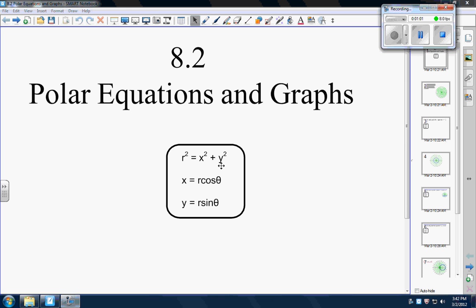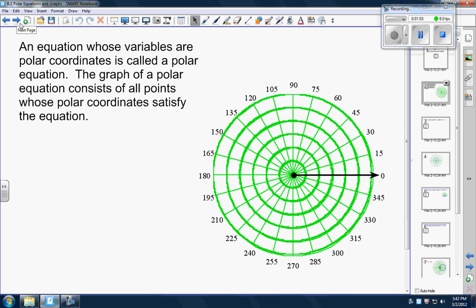Okay now this green thing here is how we're going to graph things. This is a polar graph. We don't have an xy plane anymore we have r's and thetas. So this guy is done in degrees, some of them will be done in radians obviously. And these little lines represent the radius.